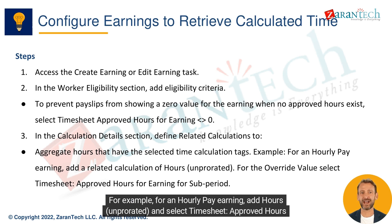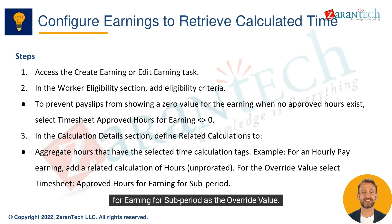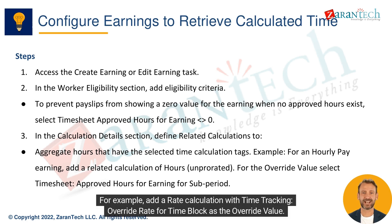For example, for an hourly pay earning, add hours unprorated and select timesheet approved hours for earning for sub-period as the override value. Use override rates if configured for time entry codes. For example, add a rate calculation with time tracking override rate for time block as the override value.